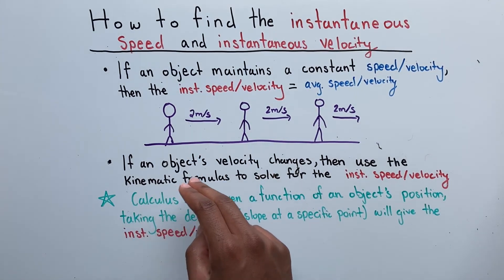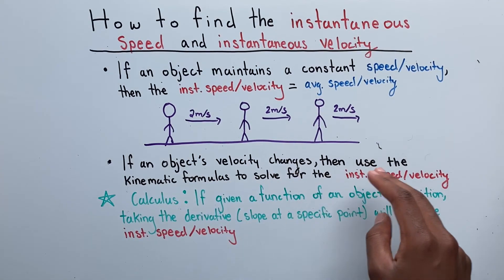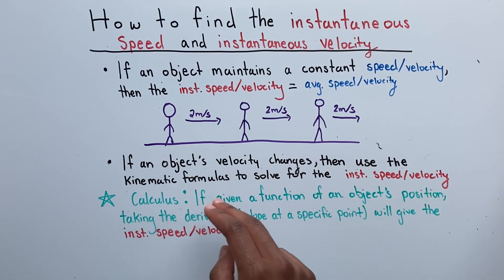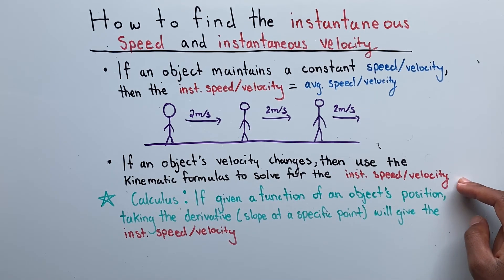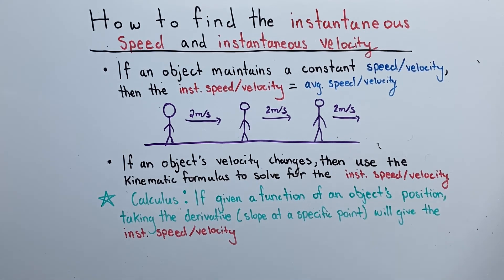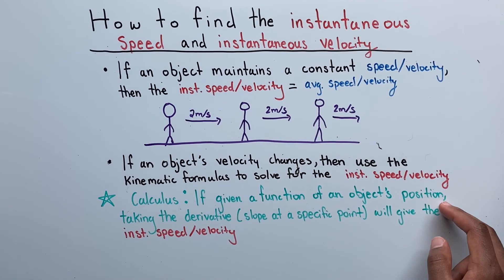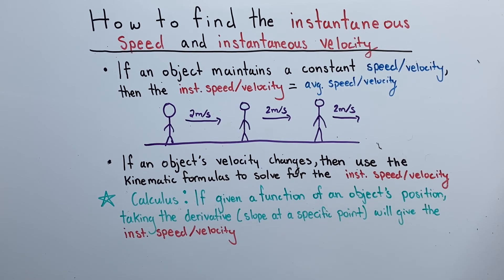If our object's velocity was changing, then we can use the kinematic formulas to solve for our instantaneous speed and our instantaneous velocity. We haven't covered kinematic formulas, but I'll do that in a later video. And for those who are in calculus-applied physics, if you're given a function of an object's position, then you can take the derivative and it'll give you the instantaneous speed and the instantaneous velocity at that specific moment in time.